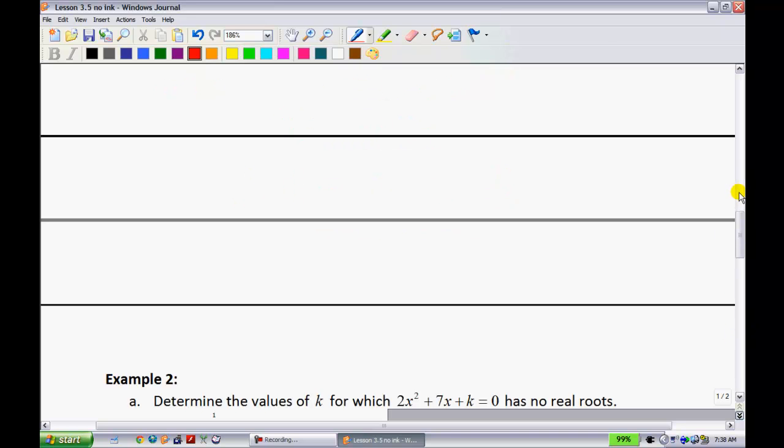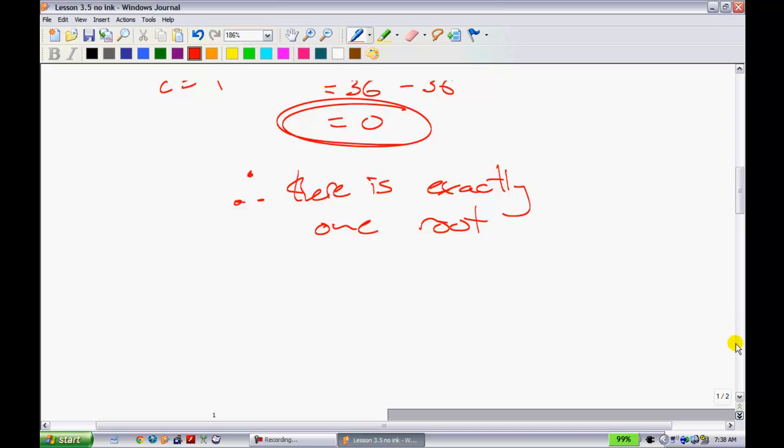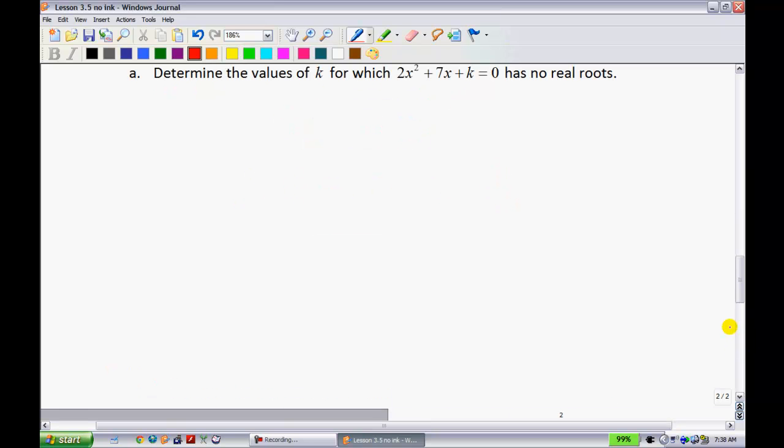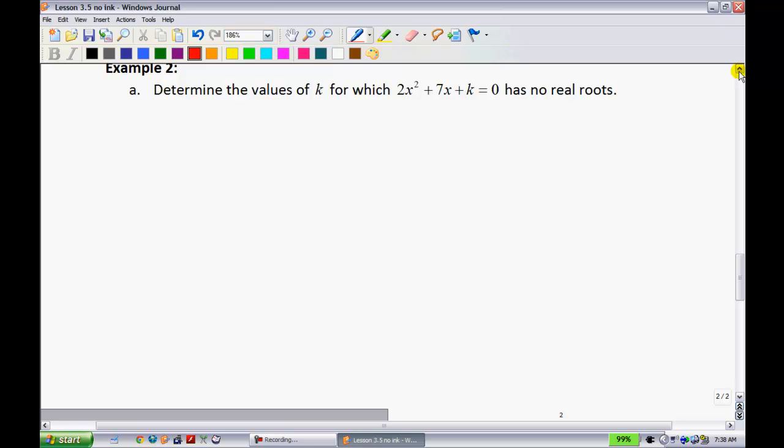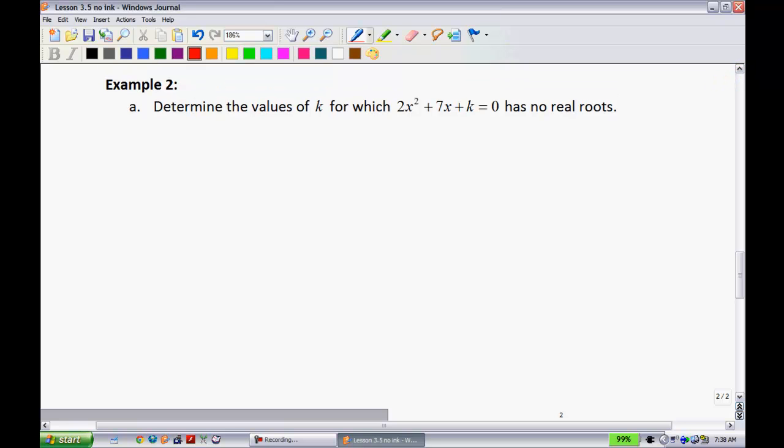Example 2, we'll focus on ones where we have a missing k value normally. Determine the values of k for which 2x squared plus 7x plus k equals 0 has no real roots. Well, the part I want to highlight here is where it says no real roots. What do we know about something that has no real roots? Well, we know that the discriminant must be less than 0.